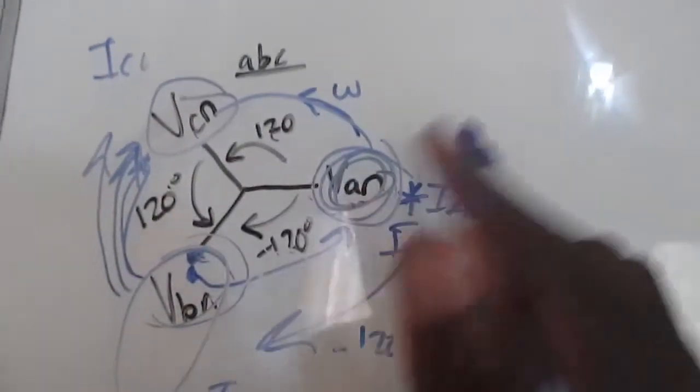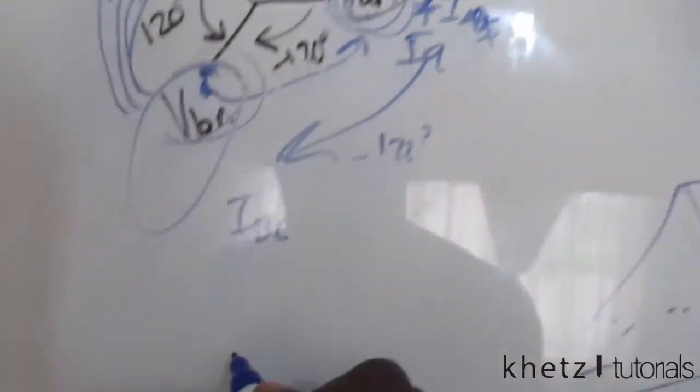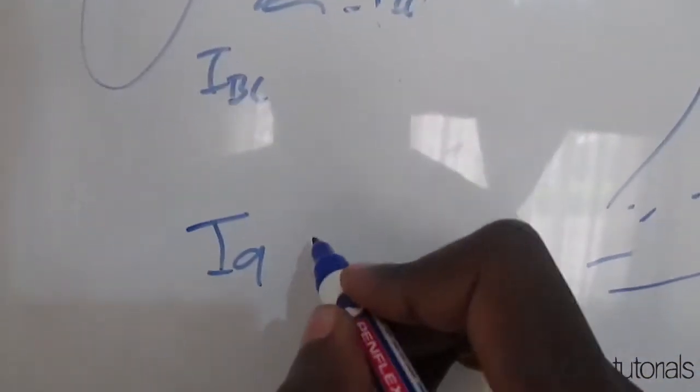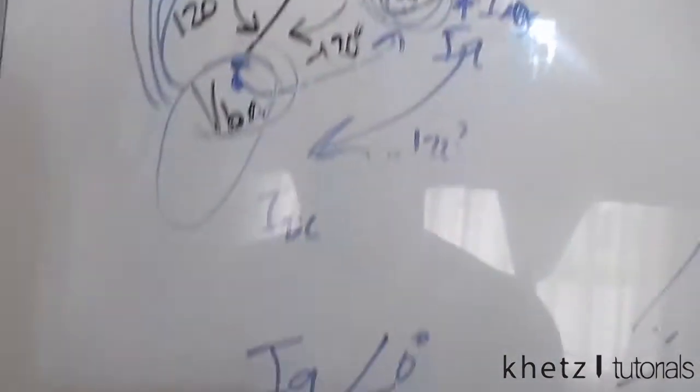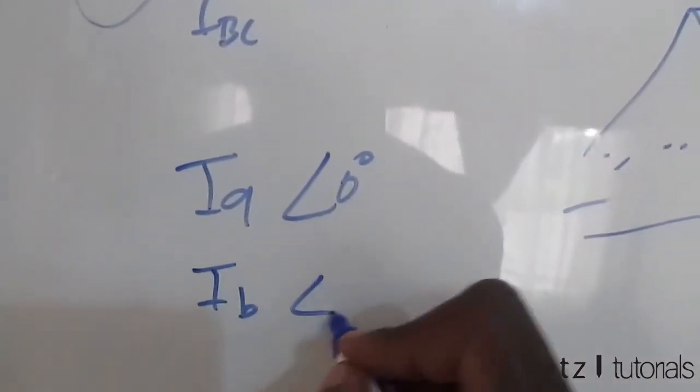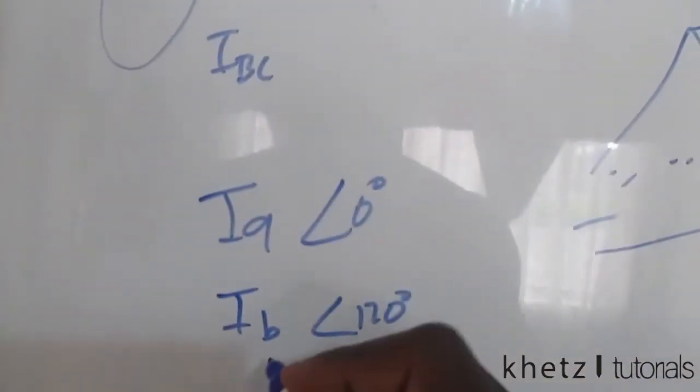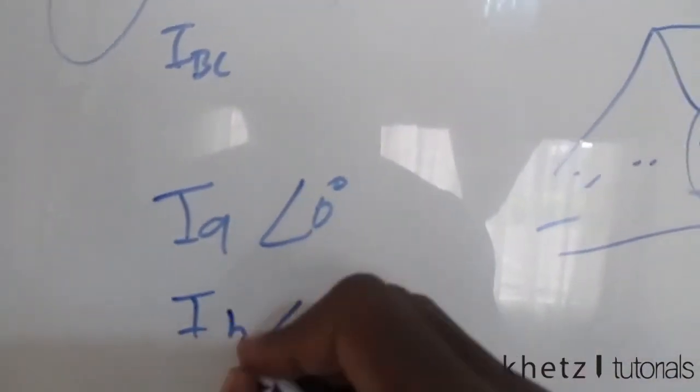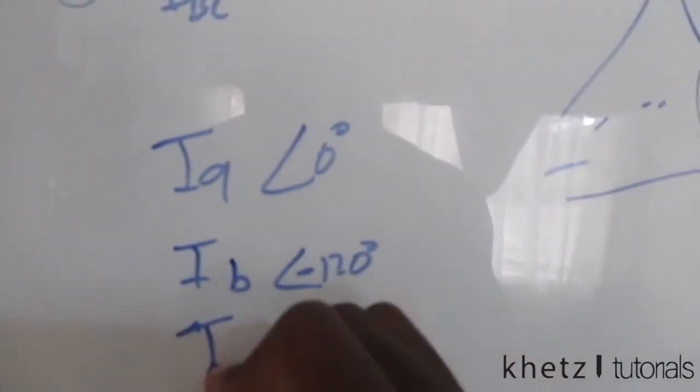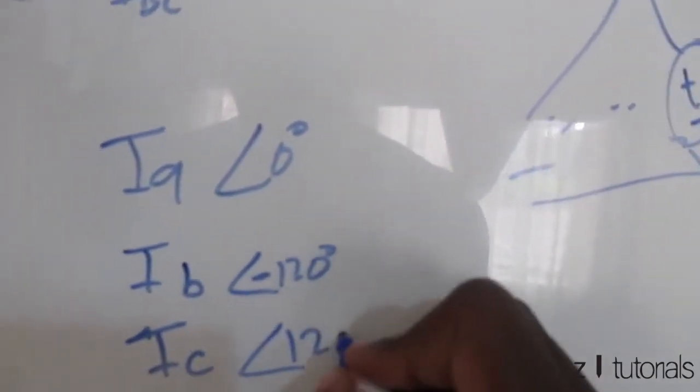We know for sure that using this positive sequence, if we have IA over here—let's say it has an angle of zero—then we know that IC would be 120 degrees more, and we know that IB will be 120 degrees less.